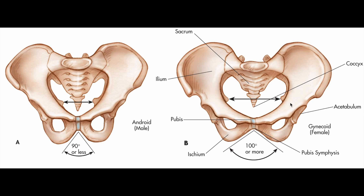The fifth point is that the sacrum is shorter, wider, and flatter in the female compared to the male.